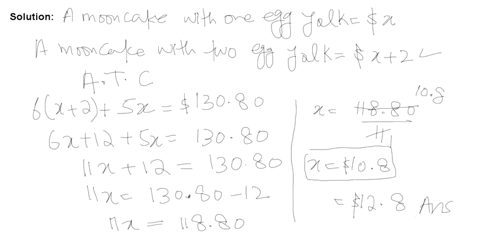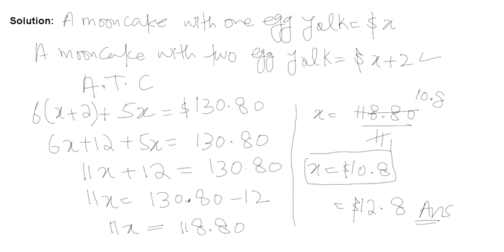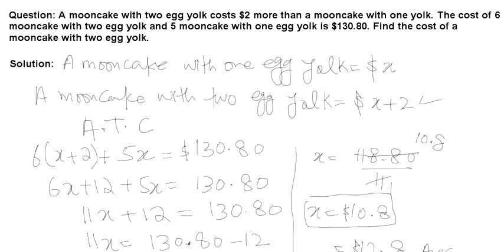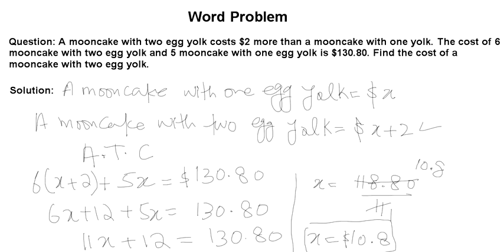So $12.80 is your answer — the price of a moon cake with two egg yolks. I hope this video was helpful. Please let me know in the comments how helpful these videos are and how well I did with my new equipment. If you really like it I might continue making videos this way, otherwise I may go back to my previous method. If you are new to my channel, please consider subscribing, share the link, and let me know in the comments. Thank you.